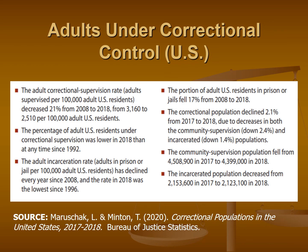The adult incarceration rate has declined every year since 2008 — so it wasn't just a blip — with the rate in 2018 being the lowest since 1996. We're seeing a major change in how our correctional system is working. This isn't a precipitous drop, but it's definitely fixing that major spike we saw from the mid-1970s until around 2007 and 2008.